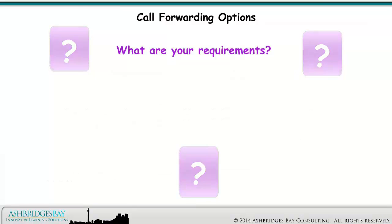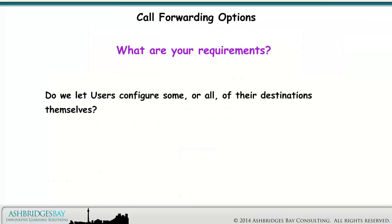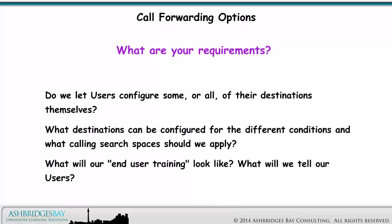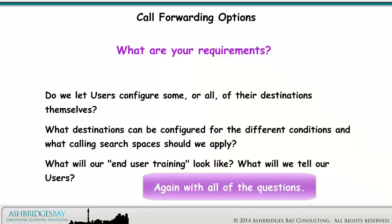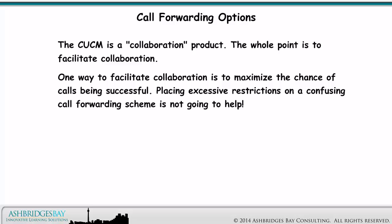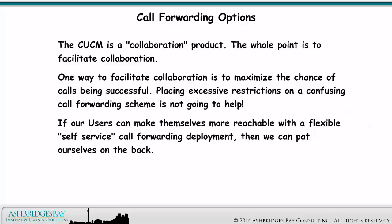What are your requirements? Do we let users configure some or all of their destinations themselves? What destinations can be configured for the different conditions? What calling search spaces should we apply, and what will our end user training look like? The CUCM is a collaboration product — the whole point is to facilitate collaboration. One way to do that is to maximize the chance of calls being successful. Placing excessive restrictions on a confusing call forwarding scheme is not going to help.